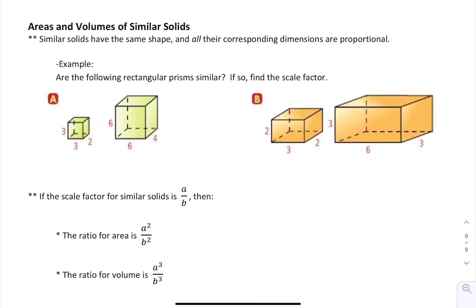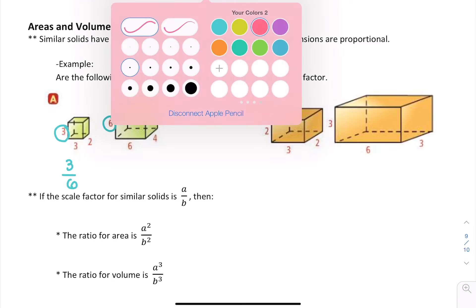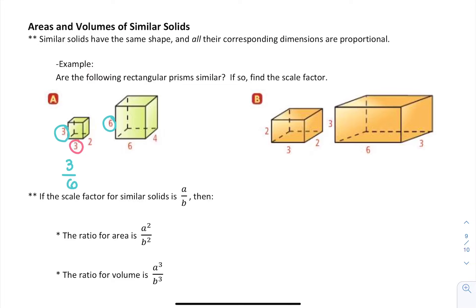To decide if two prisms are similar, we're going to compare each side and see if it is proportional, and if so, we are able to find the scale factor. We're going to pair up, so this side on the left goes with this side, which we'll call 3 over 6. Our next pair is this side and this side, so 3 over 6. And our last pair is 2 and 4, so 2 over 4.